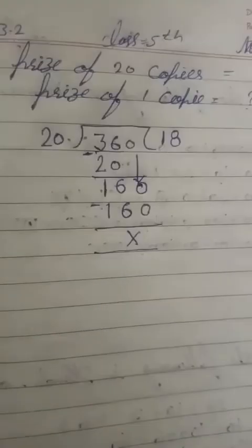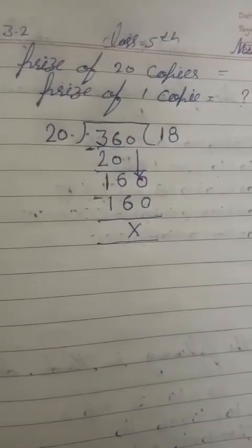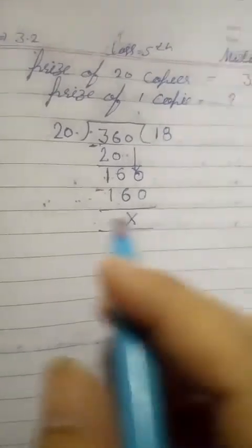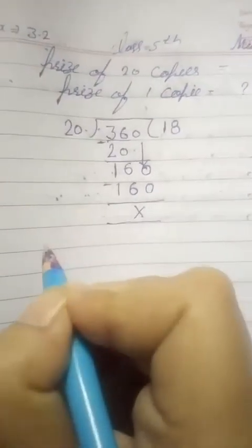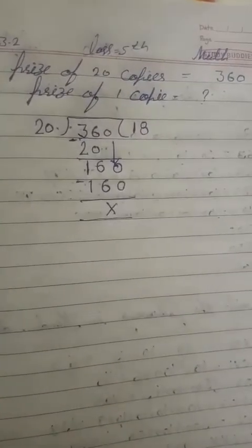The quotient is 18, so the price of one copy is 18 rupees. Complete this question. Next question.